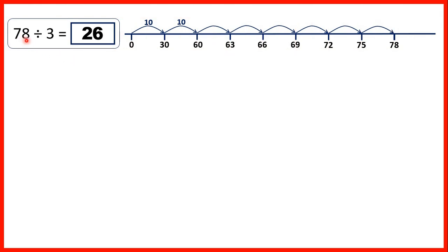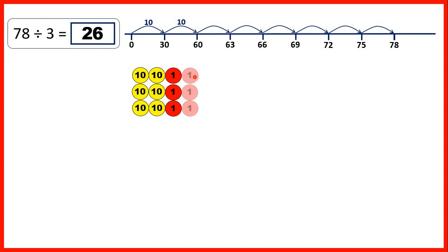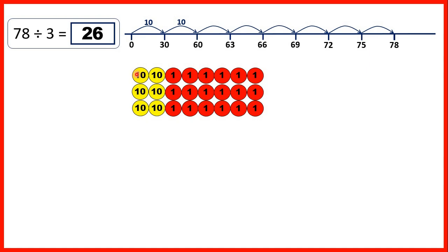Let's take a closer look at these questions. First, 78 divided by 3. We made a jump of 10 times 3, so we can show 3 tens. Then another jump of 10 times 3 — another 3 tens. Then we made 6 jumps of 3, so we show 6 ones on each row. Altogether we have 26 in each row — 2 tens and 6 ones. If we regrouped these counters we would have 78, because we can regroup 10 of the ones to make another ten, leaving 8 ones.